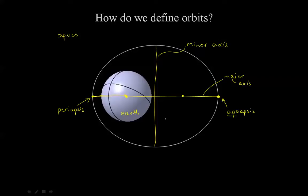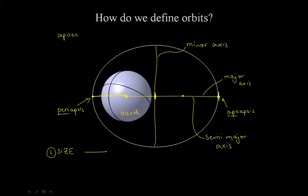Apo for furthest, and peri for closest or nearest. If I were to change the size of the major axis and make it longer and longer, the orbit would drastically increase in size — and that is our first parameter: size. The size is indicated by the length of half the major axis, also known as the semi-major axis, denoted by the letter A.